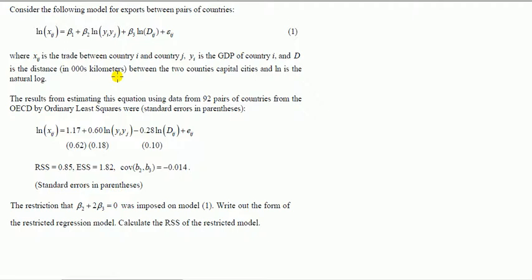In statistical modeling, econometricians call the unrestricted model sometimes the full model, and the one with the restriction is called the reduced model. So we're just going to write out the form of the restricted regression model imposing this constraint on this model.